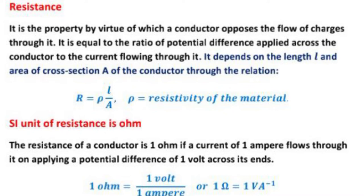What is the SI unit of resistance? The SI unit of resistance is ohm, named after the scientist Ohm. The resistance of a conductor is 1 ohm if a current of 1 ampere flows through it on applying a potential difference of 1 volt across its ends. So 1 ohm equals 1 volt upon 1 ampere.